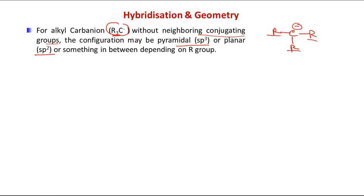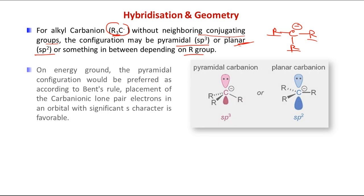The hybridization may be either sp3 or sp2 or something in between, depending on what kind of R groups are present in the structure. It is not fixed that it will always be pyramidal or always sp2. So we have these two extremes: pyramidal carbanion and planar carbanion.